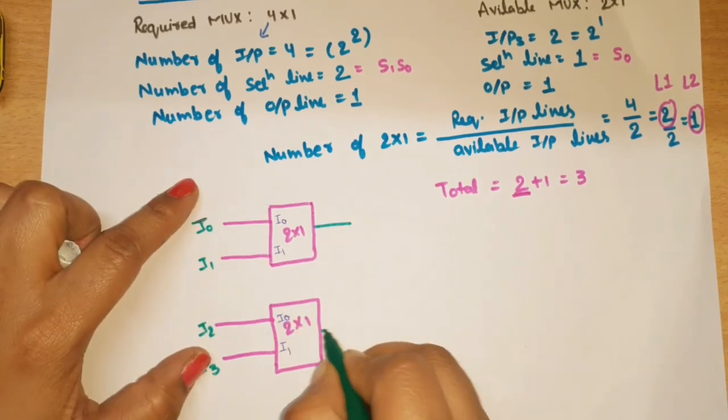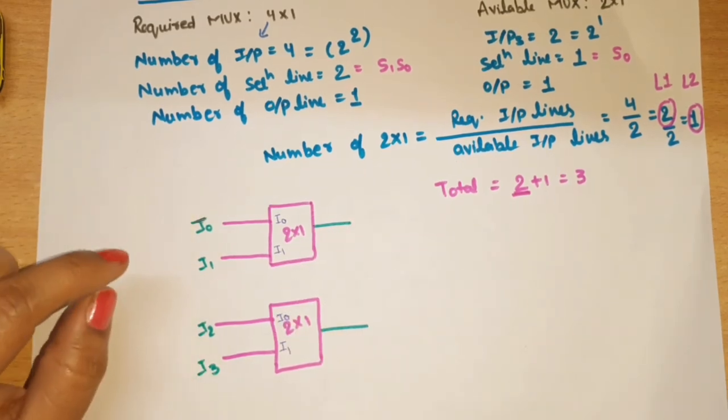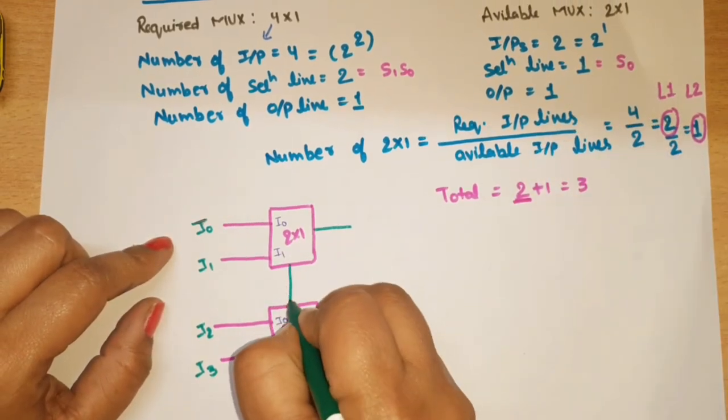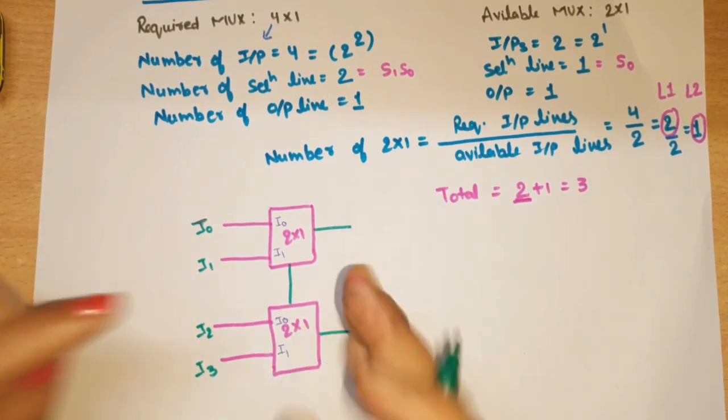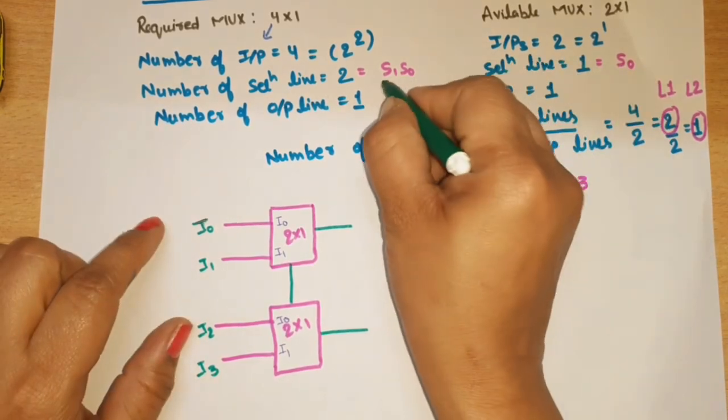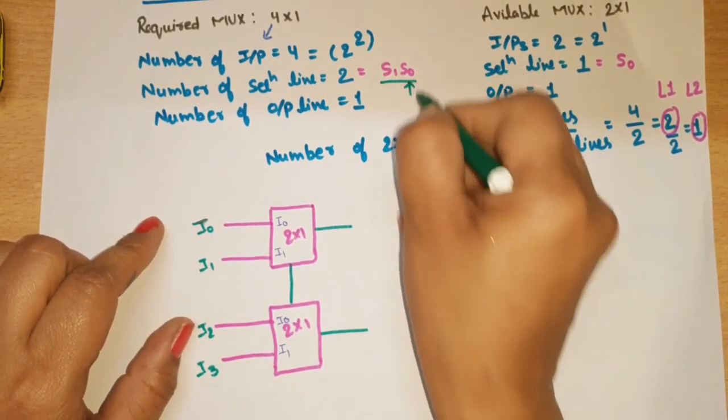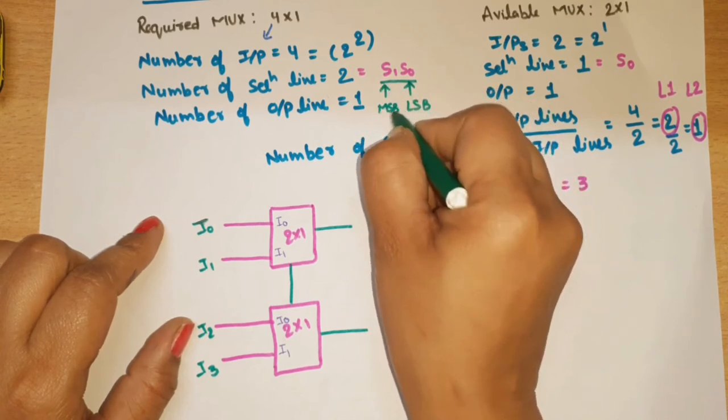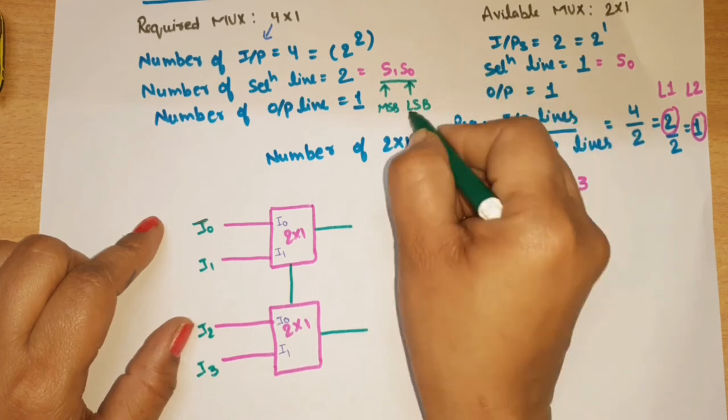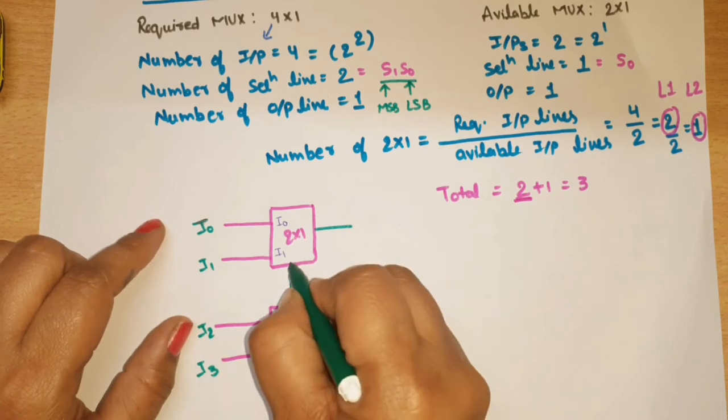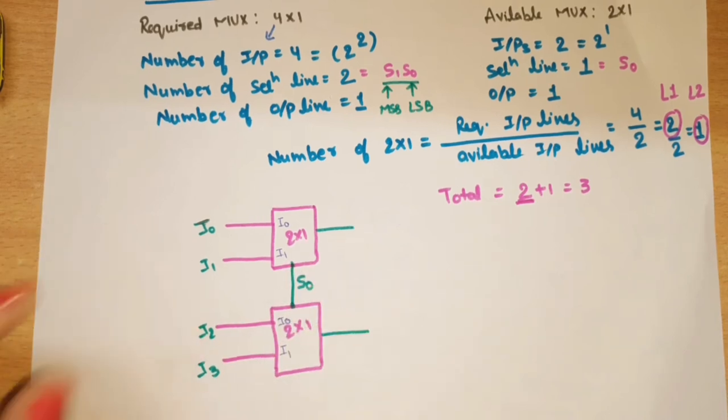One output is this. For selection lines, 2-to-1 means the selection line is 1. You have to remember that the selection lines will be LSB and MSB to this side. This means in this case, this is LSB and this one is MSB. So in your level 1, the selection line common will be S0, which will be connected here and here.